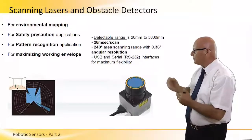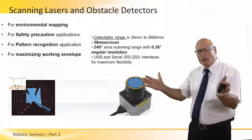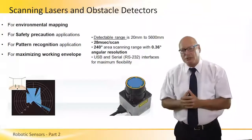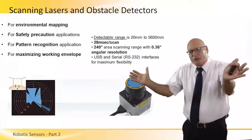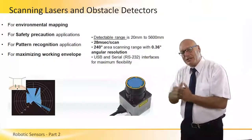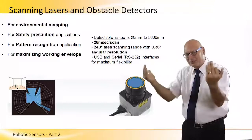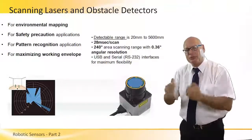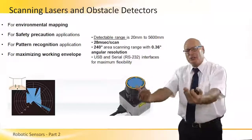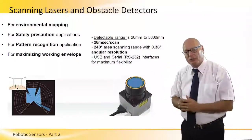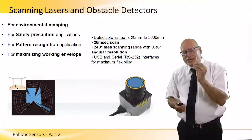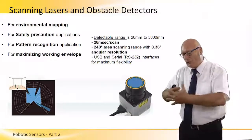The scanning range is 240 degrees with 0.36 degrees angular resolution. So if we divide 240 degrees into segments of 0.36-degree angles, we see a precise picture of the object in front of us. All this information is communicated back to the controller either using USB or RS-232 for maximum flexibility as the robot moves.